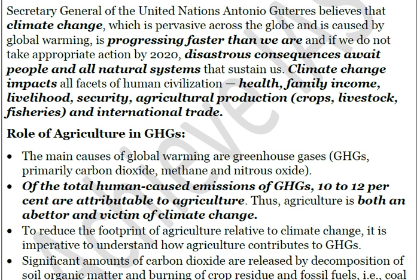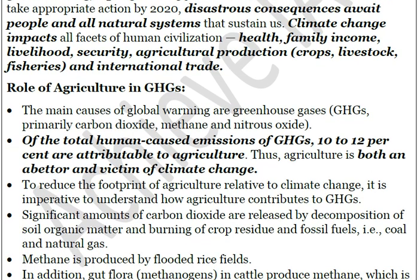It is mainly ignored that greenhouse gases are also produced by the agriculture sector. It has been estimated that out of total emissions, 10 to 12 percent are attributable to agriculture — a large amount. Thus agriculture is not just a victim of climate change but also an active contributor. To reduce the footprint of agriculture relative to climate change, it is necessary to understand how this sector contributes to greenhouse gases. Significant amounts of carbon dioxide are released by the decomposition of soil organic matter.